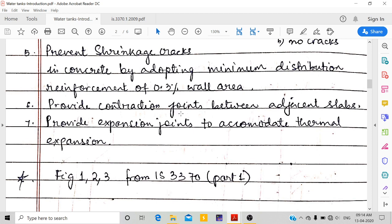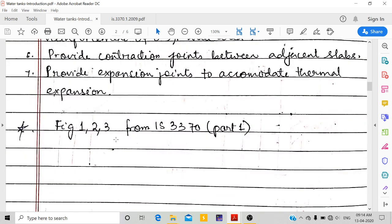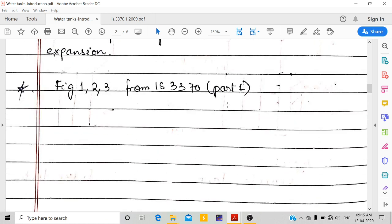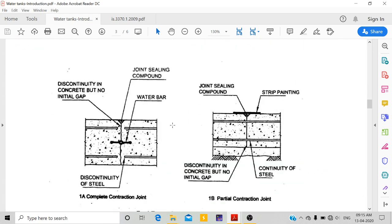To prevent shrinkage cracks in concrete, we should adopt minimum distribution reinforcement of 0.3 percent of wall area. We provide contraction joints between adjacent slabs and expansion joints to accommodate thermal expansion. In IS 3370 part 1, figure 1-2-3 shows different types of joints.